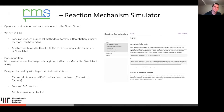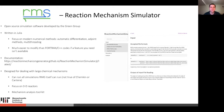Our software, the Reaction Mechanism Simulator, is an open source simulation software developed by the Green Group. It's written in Julia, a new open source language that is JIT compiled. JIT compilation essentially lets it feel like you're programming in Python or MATLAB but with the speed of C++ and Fortran. It has an enormous focus on modern numerical methods, the best differential equation software available, automatic differentiation, adjoint methods, and multi-threading. It's also much easier to modify than Fortran and C++ codes.